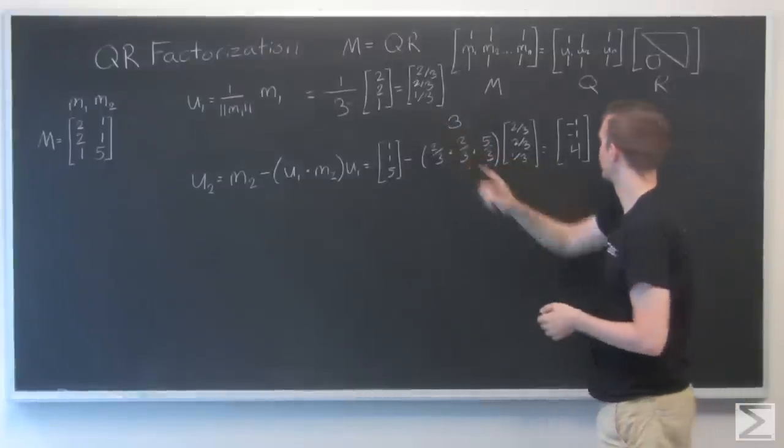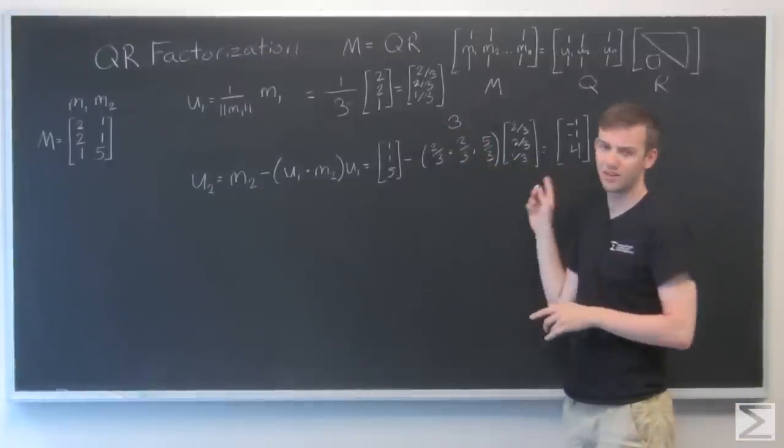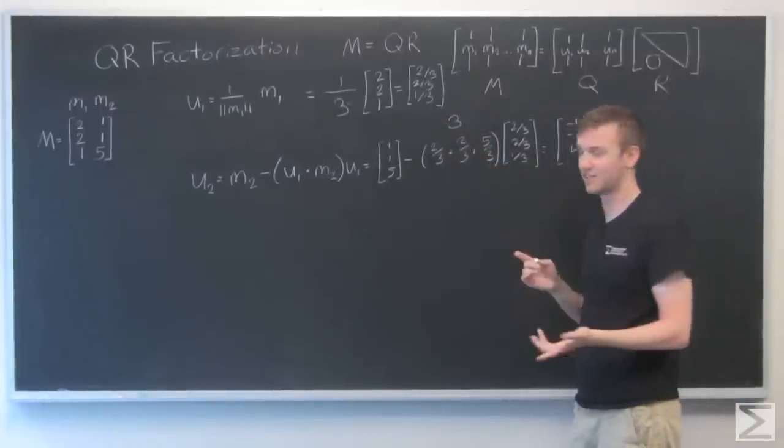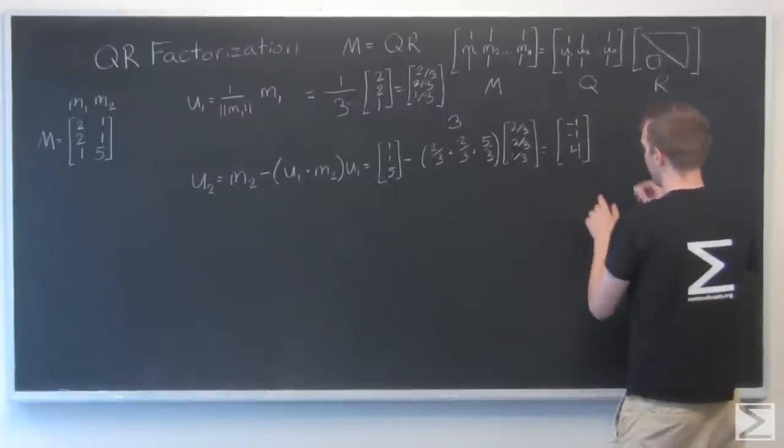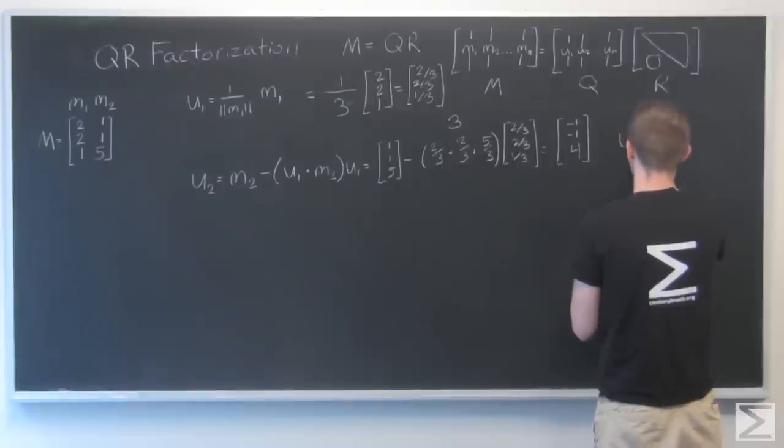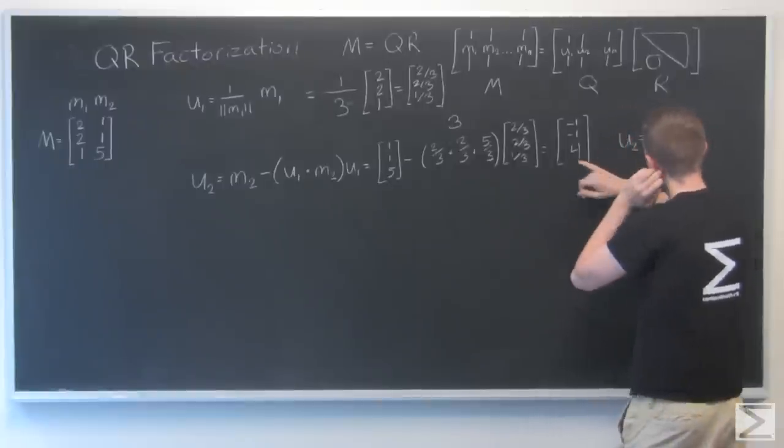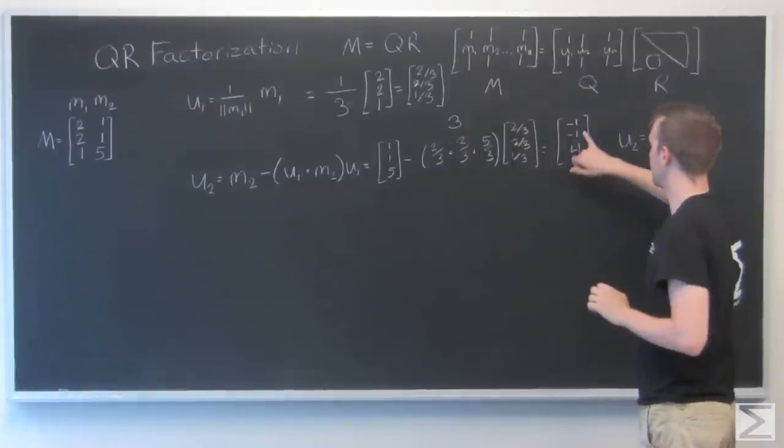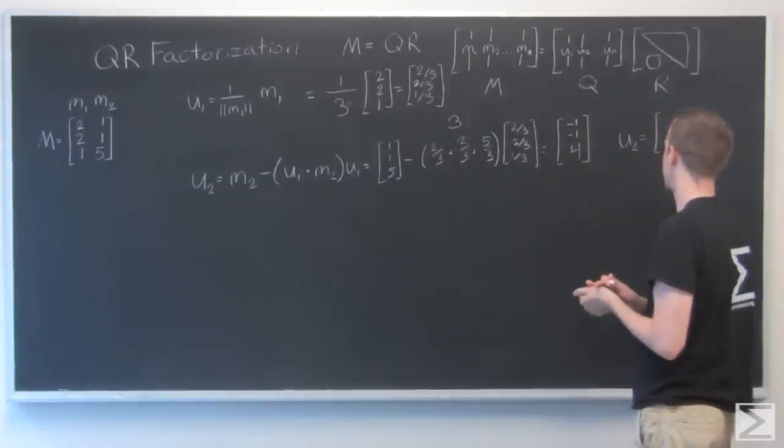That is not my u2. I forgot the last step, which is divide by its length. So my real u2 is going to be... 4 squared is 16 plus 1 plus 1, that's 18.